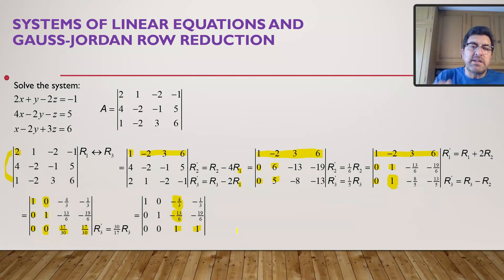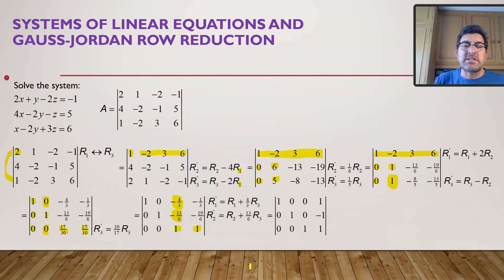Look at how easy this now is. For me to change row 1 to get a 0 there, this needs to become a 4 over 3. So the new row 1 is going to be 4 over 3 times row 3 plus the old row 1. The same for row 2. I can get this into a 0 by turning this into 13 over 6. So I'm going to say the new row 2 is the old row 2 plus 13 over 6 times row 3. And that then takes care of row 1 and row 2.